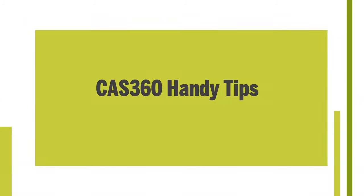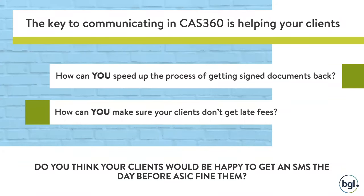Where I'm going to start is all about communication. For those of you that joined last week's webinar, I spoke about the philosophy when we built CAS360 — how we focused on preparing ASIC forms and completing annual reviews as the absolute core. But we also wanted to look at ways to automate things done outside of CAS Desktop, like spreadsheets and calendars. This week we're going to focus on communicating with your clients using CAS360 instead of going to Gmail or Microsoft Outlook.